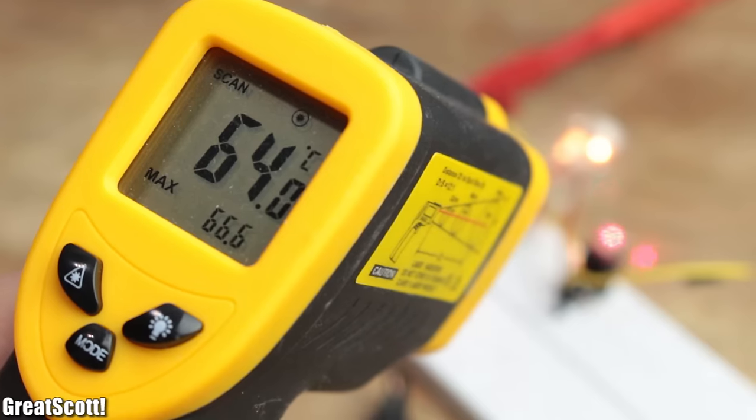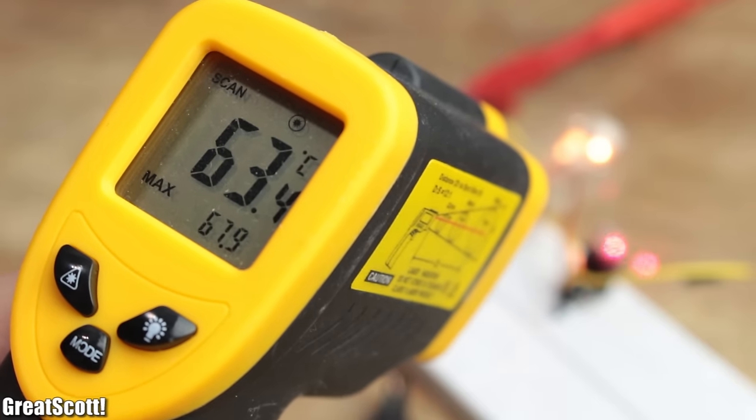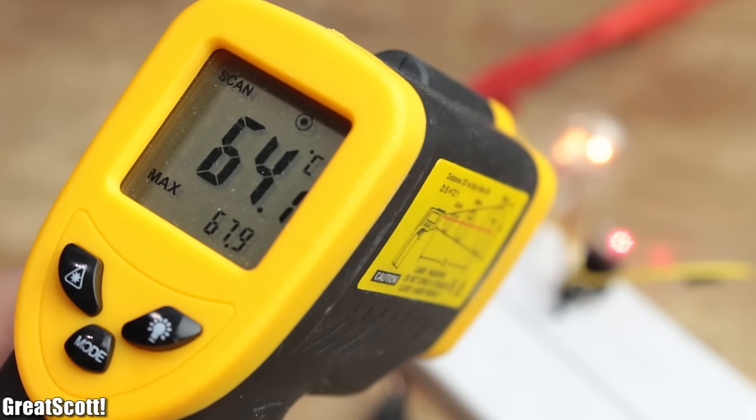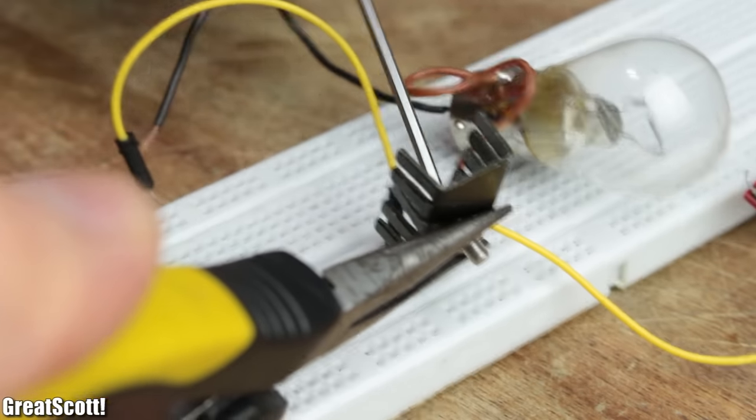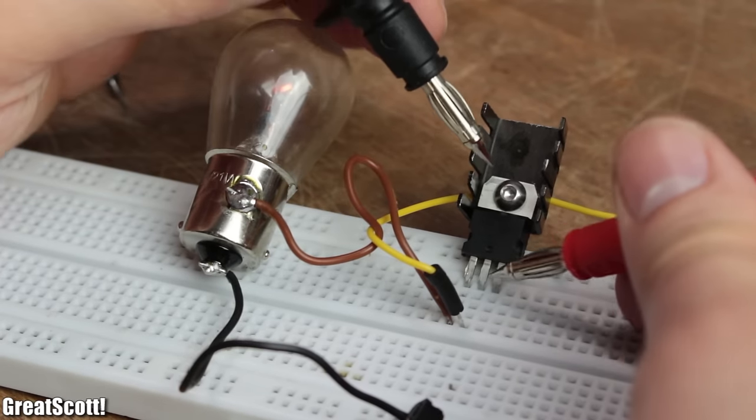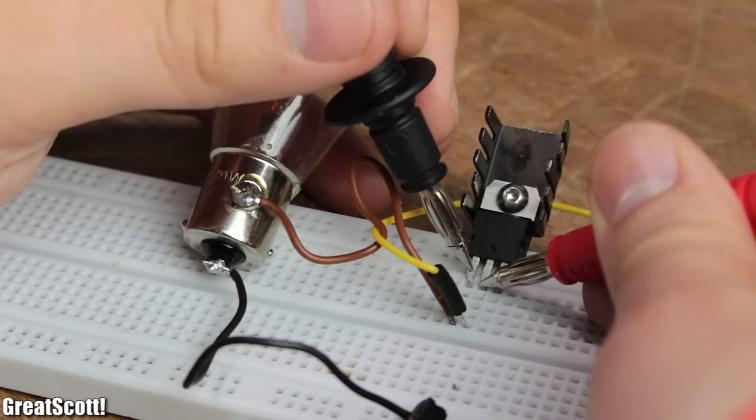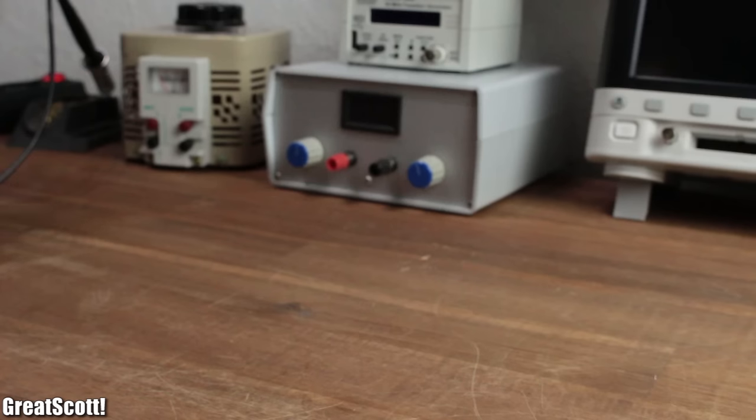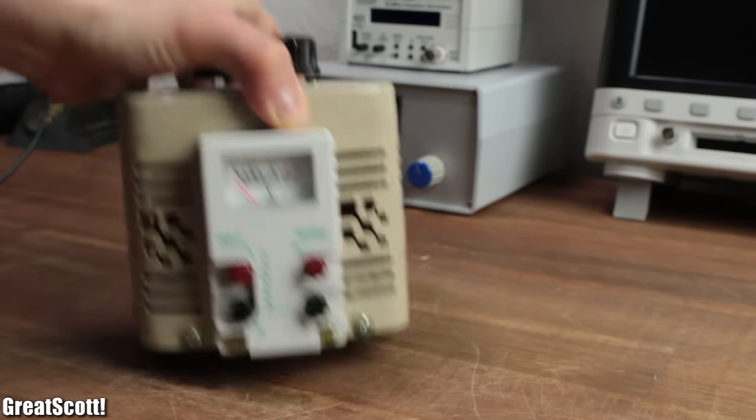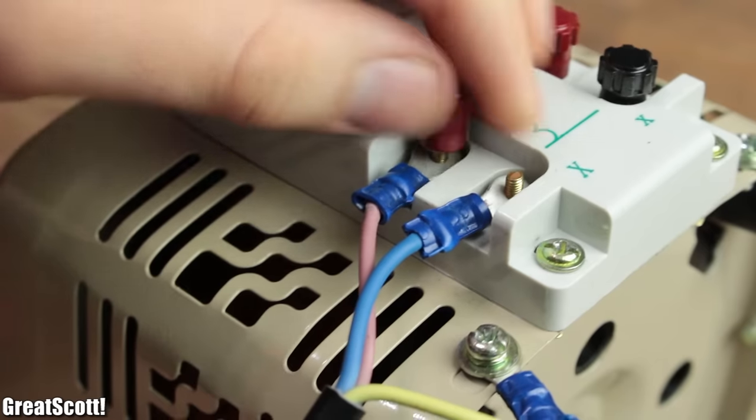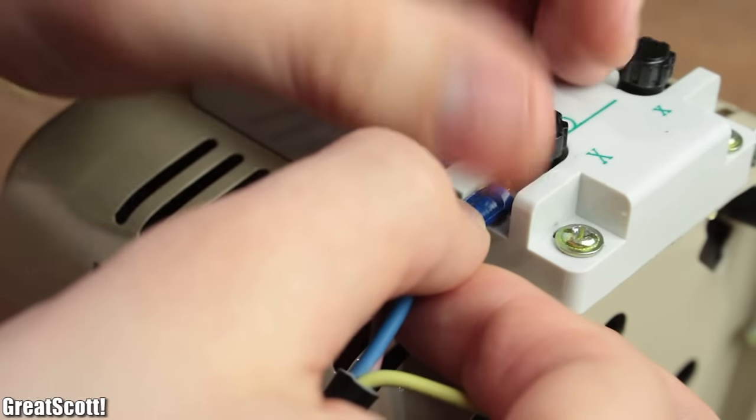If we would replace the LEDs with a bigger load like this small light bulb which draws around 2 amps, we can also see that the temperature of the thyristor increases drastically and even requires a heatsink. The reason is the voltage drop between the anode and cathode which therefore creates a power loss.